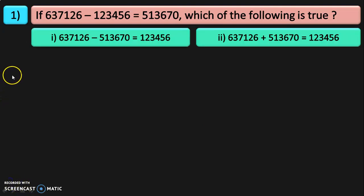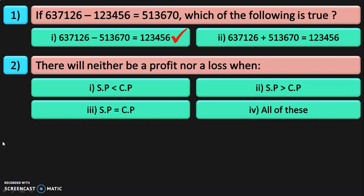If 6,37,126 minus 1,23,456 equals 5,13,670, which of the following is true? The correct answer is: 6,37,126 minus 5,13,670 equals 1,23,456. Because when you move this number to the other side of the equation, it becomes minus and the other term after the equals becomes plus. Next sum: there will be neither a profit nor a loss when selling price is equal to cost price.